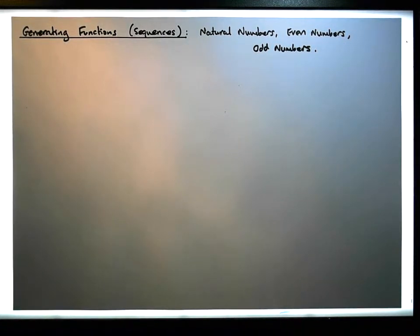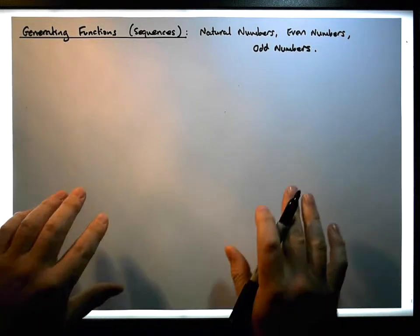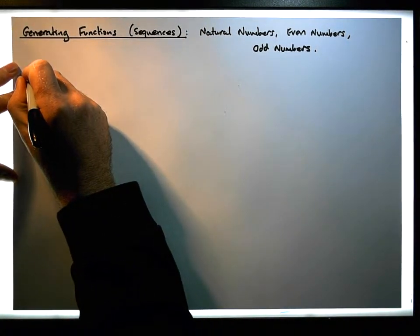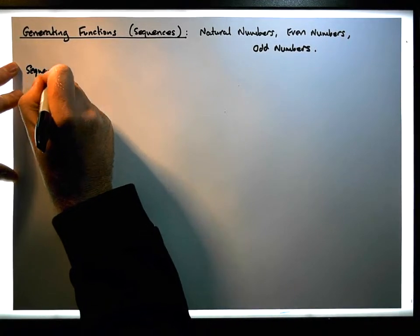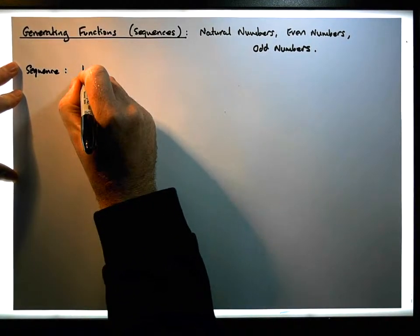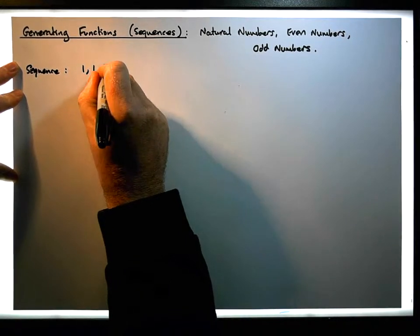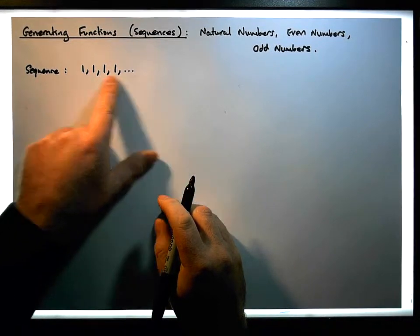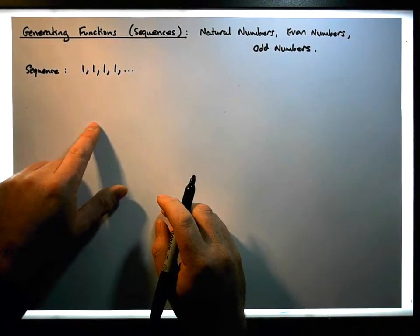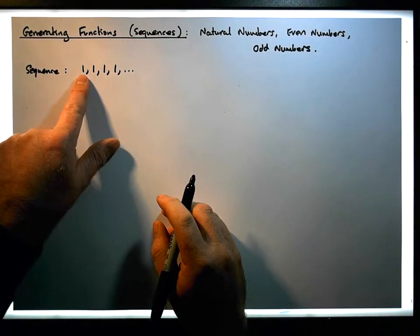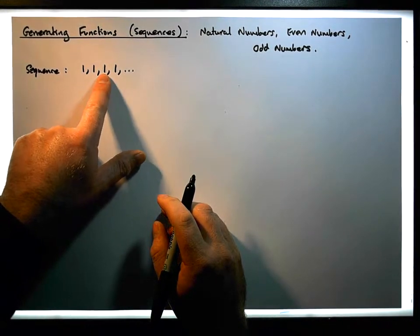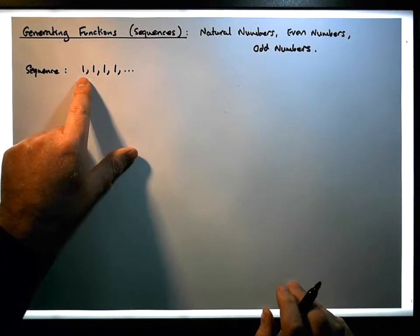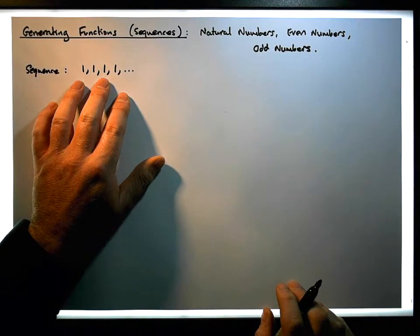As a starting point, we're going to use our base generating function that we generated in our previous video, associated with this sequence. The sequence looks like this: it's one, one, one, one, dot dot dot — so it's just a continuous sequence of ones out to infinity. The first term is a one, the second term is a one, the third term is a one, the fourth is a one, and so on and so forth.